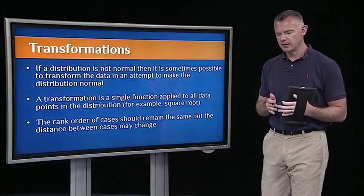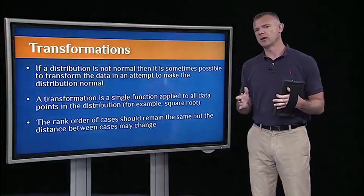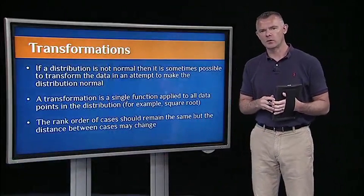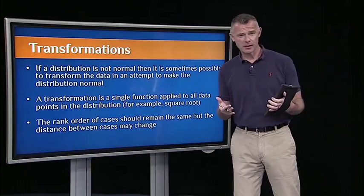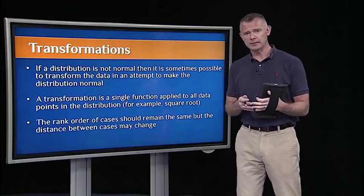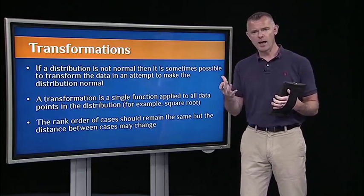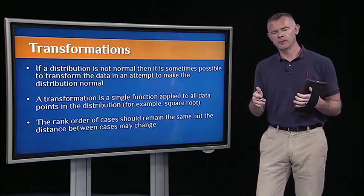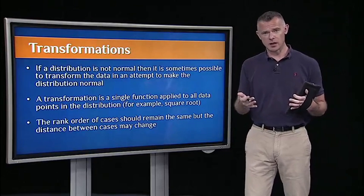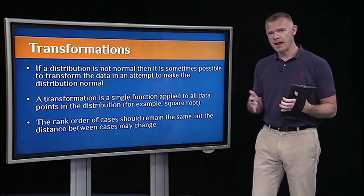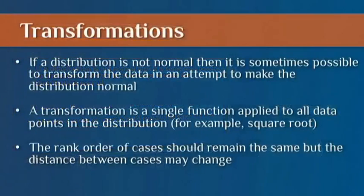In the last segment, we talked about these main assumptions that we've been making throughout the course. One of the primary assumptions is that the outcome variable y is normally distributed. We looked at ways to detect violations of that assumption. Now we're going to look at ways to fix our data set to make it normal if we detect a non-normal distribution.